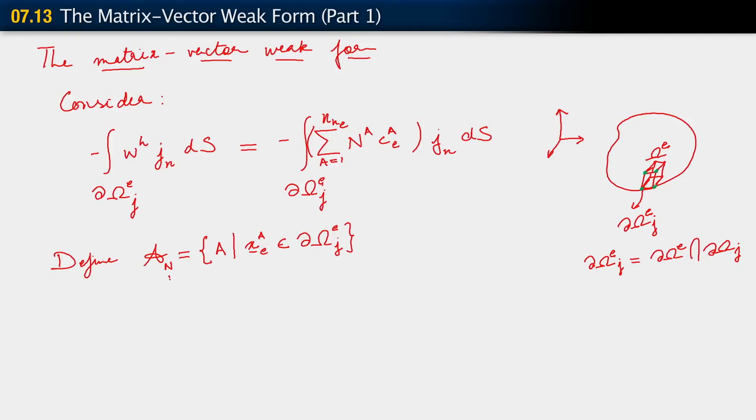I've used the subscript n to suggest that this is the set of nodes or degrees of freedom corresponding to the Neumann boundary data. Let's use this approach.